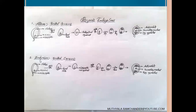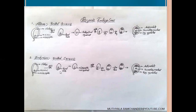Bisporic embryosacs are mainly two: allium and endemion. The major difference is: after the first reduction division, two dyad cells are present. If the chalazal end dyad cell is in the active position and develops into a complete embryosac, it is called allium type. If the micropylar end dyad cell is active and develops into a complete embryosac, it is called endemion type. At the mature stage, both allium and endemion are similar to polygonum, containing eight cells arranged in three plus two plus three arrangement.